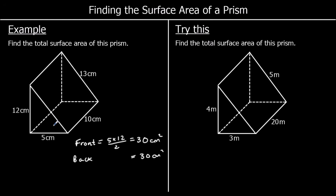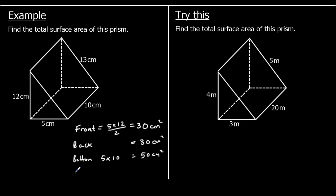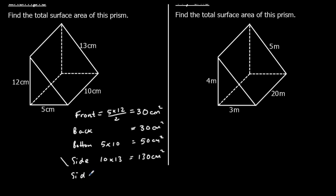The bottom is 5 times 10, which is 50cm squared. We've got the slanted side — so the slanted side is 10 times 13, which is 130cm squared. And the straight side is 12 times 10, which is 120cm squared.